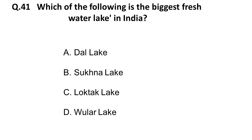Which of the following is the biggest freshwater lake in India? The correct answer is Wular Lake — it is the biggest freshwater lake in India.